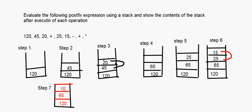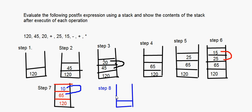Step 8: we have a plus sign. It is applied to the top two elements: 65 plus 10 equals 75. The stack is now 120, 75.